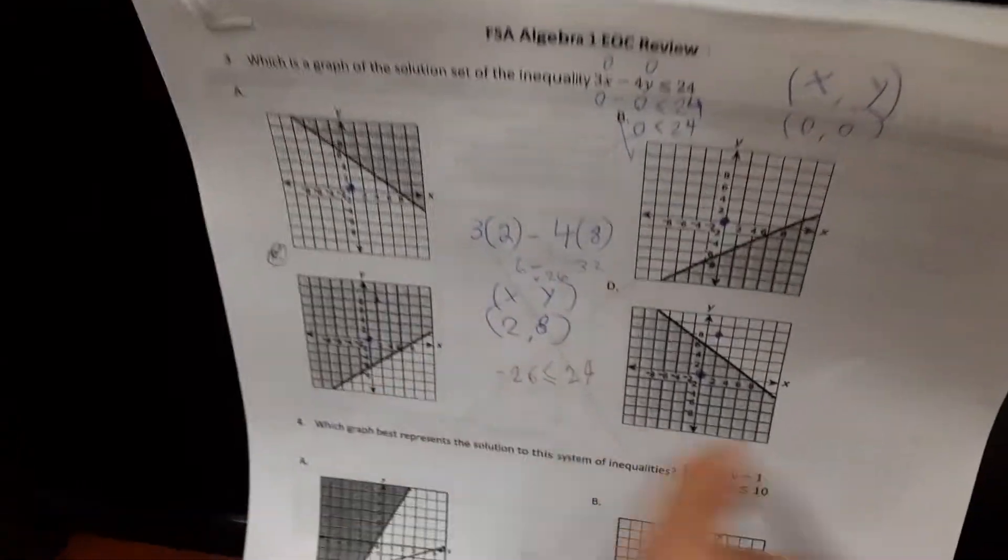So which one of these, or these are probably two of them, right? Which two of them are true when it's zero, zero? C and D. Ah, those two.